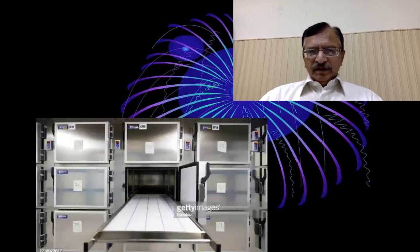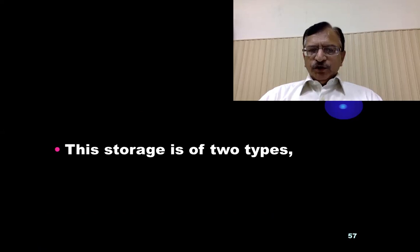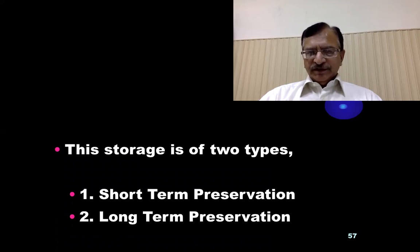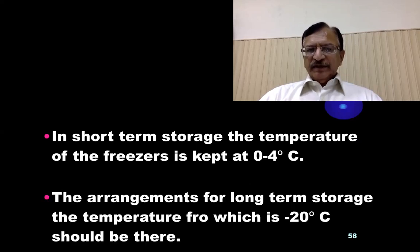These are individual body container freezers. This is another single body container but in a cupboard shape. Storage is basically of two types: short-term preservation and long-term preservation. In short-term storage, the temperature of the freezer is kept from 0 to 4 degrees centigrade. For long-term storage, the temperature is minus 20 degrees centigrade.